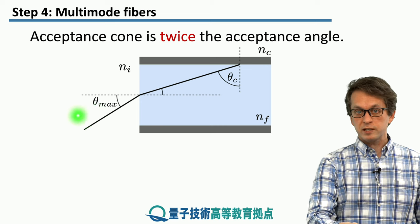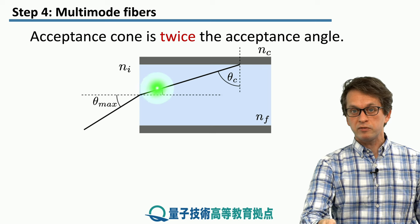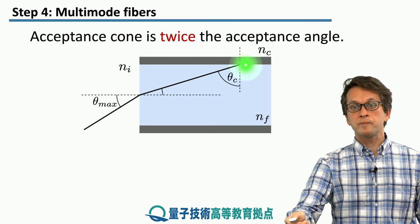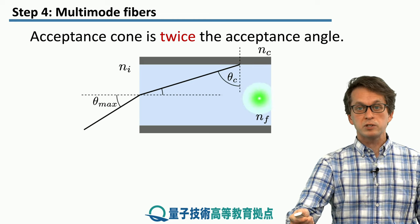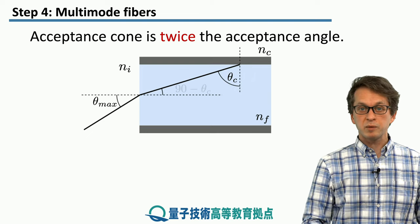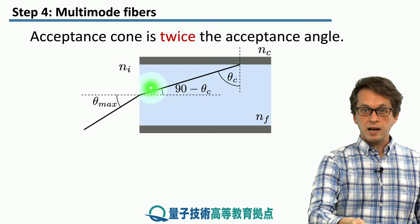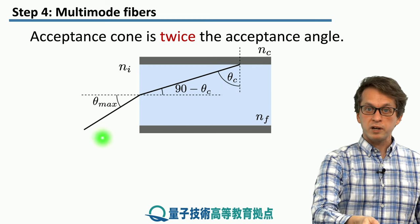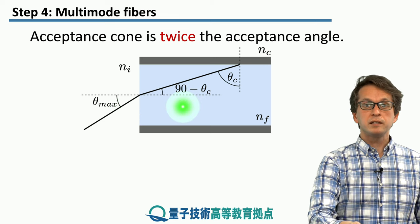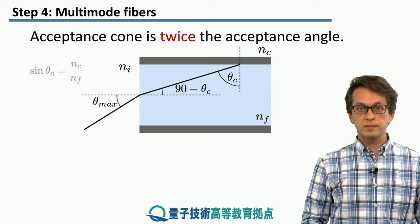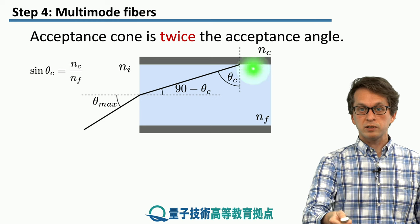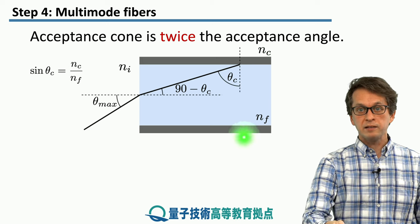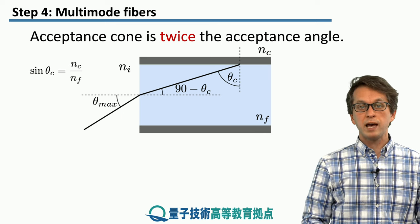We want this angle to be such that when light gets refracted into the fiber and then hits the cladding, it gets reflected completely back inside the fiber. So we set this angle to theta_C, the critical angle needed for total internal reflection. Using basic trigonometry, the angle of refraction at the fiber surface must be 90 degrees minus theta_C. From the previous step, sine of the critical angle equals the ratio of the refractive indices of the cladding and the fiber: sine(theta_C) = NC / NF.